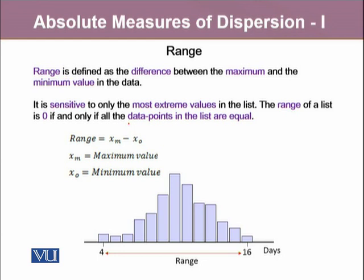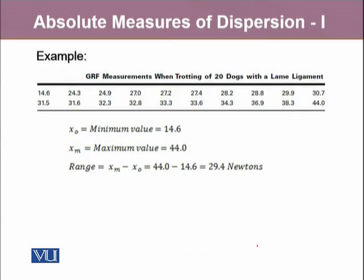In this bar graph, we can see that our data has spread out from 4 to 16, and this whole red line marks the overall range of our data. Taking an example where we measured GRF measurements from 20 dogs: the minimum value is 14.6 and the maximum value is 44.0. To calculate the range, we take the difference of maximum and minimum, which gives us 29.4 Newtons. Our overall data ranges from 14.6 to 44.0.